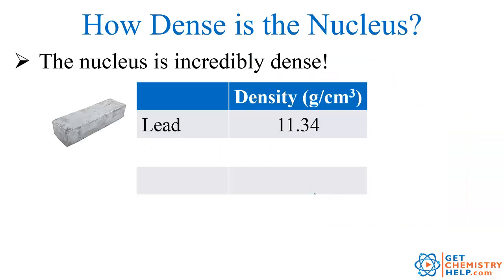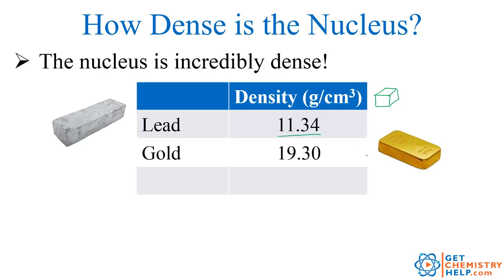This means the nucleus must be insanely dense. For comparison, let's look at a few elements commonly thought of as having high densities. Lead is very dense — which is why it's often used to block radiation — with a density of 11.34 grams per cubic centimeter. A one-centimeter cube of gold, which is even more dense, would have a mass of 19.30 grams.